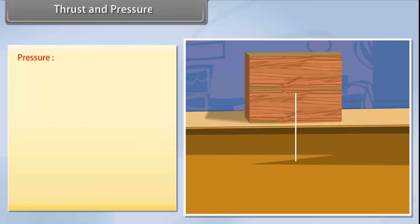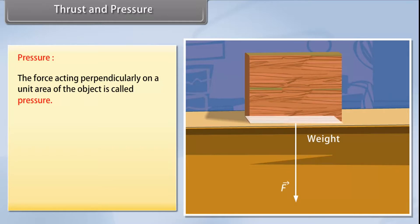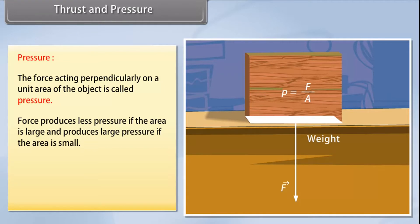Pressure: The force acting perpendicularly on a unit area of the object is called pressure. Force produces less pressure if the area is large and produces large pressure if the area is small. Pressure is equal to force upon area. The SI unit is Newton per square meter.